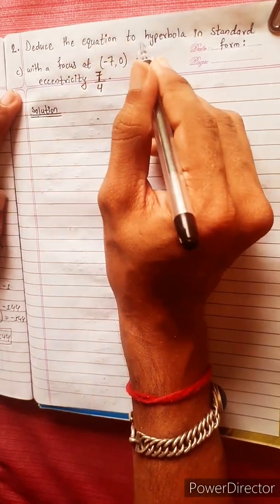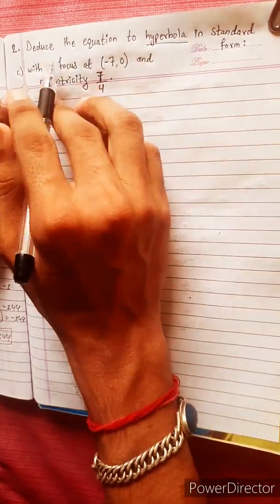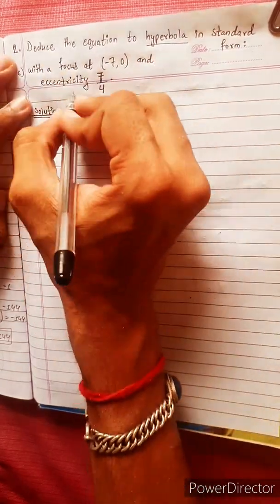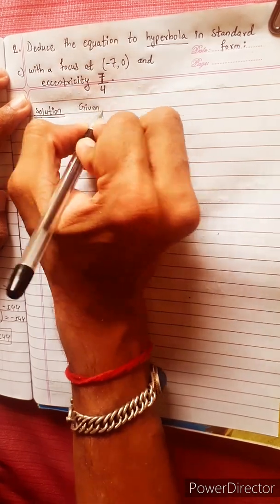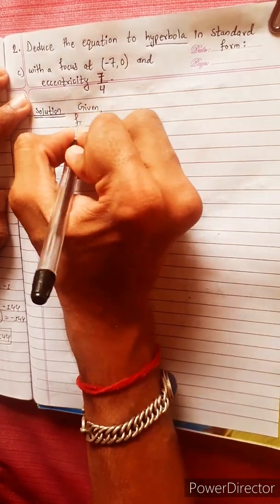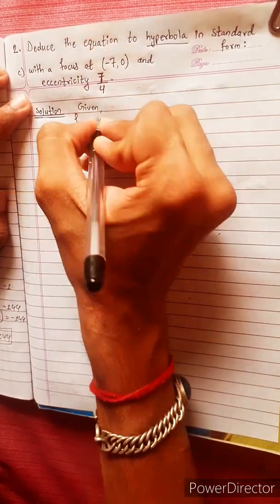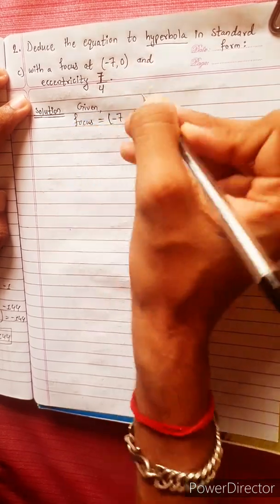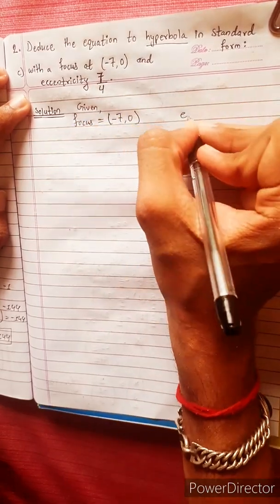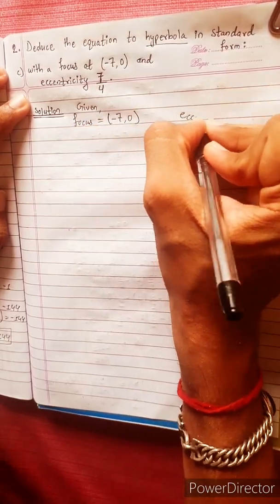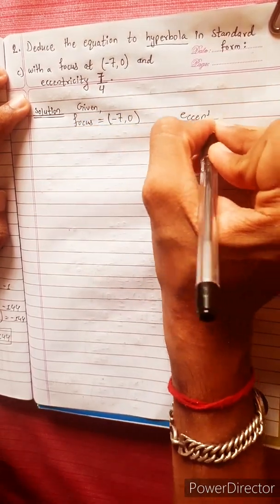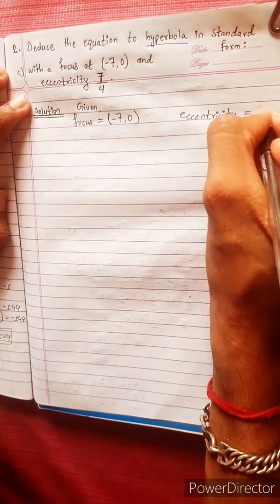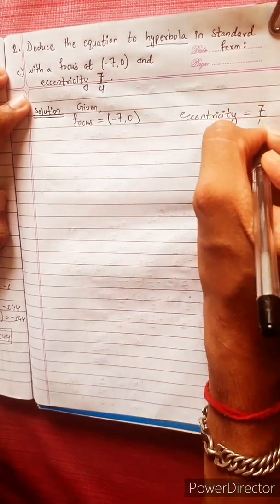Reduce the equation of a hyperbola. The hyperbola is given with focus equals minus 7, 0 and eccentricity equals 7 by 4.